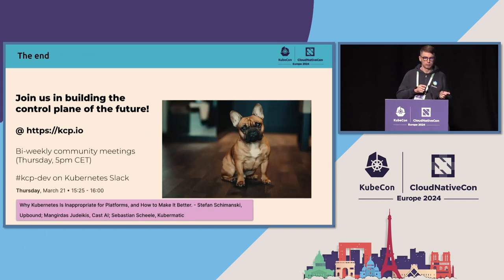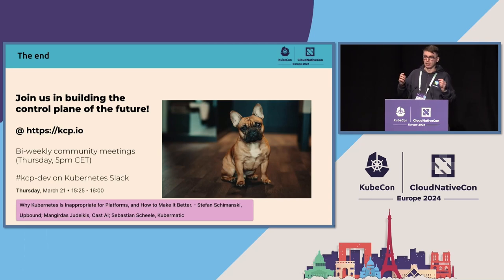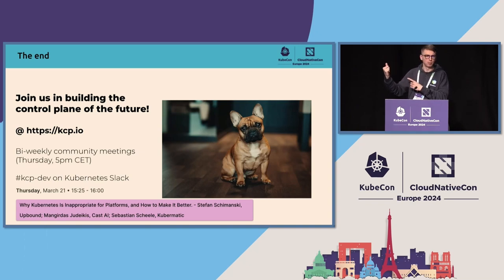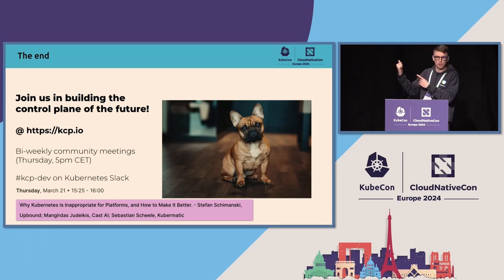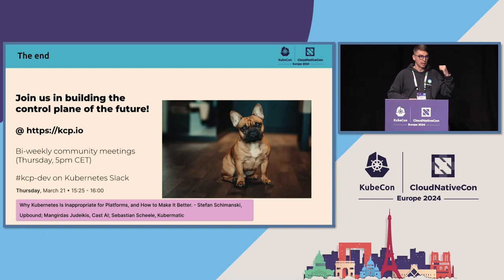If you want to know more, here's our page. We have a bi-weekly community meeting. We have one more talk today, next Thursday. And because we're in France, here's a picture of a French bulldog — for any social media post, my wife will give him a treat, so I appreciate if you tag him at KCP. Thanks for listening. If you want to know more, find us — we hang out around here. Look for the logos on the badges or jumpers. We have stickers if you come up with your questions. Thank you.